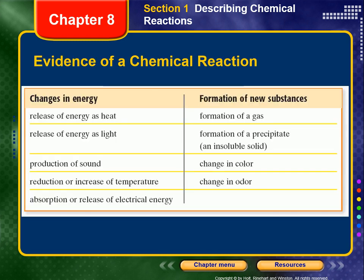We have different evidences of a chemical reaction: release of energy as heat, release of energy as light, a production of sound. Sound is the movement of particles in the air — something has to move that matter to create that wave, so it takes energy. Also, a reduction or increase in temperature, the absorption or release of electrical energy, the formation of a gas, the formation of a precipitate — that's a solid that drops out of solution — a change in color, or a change in odor.